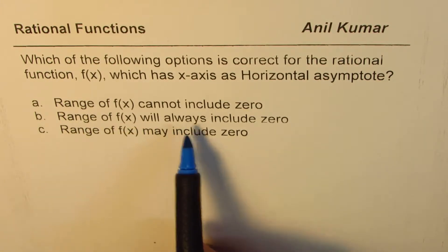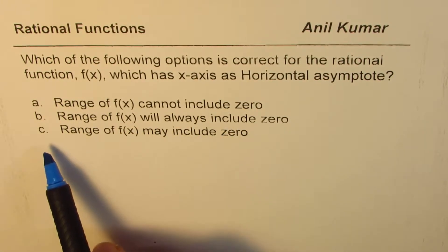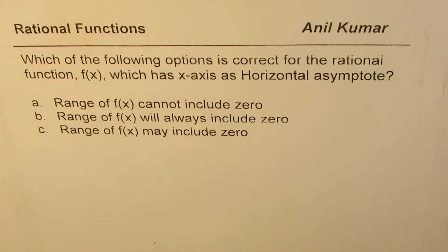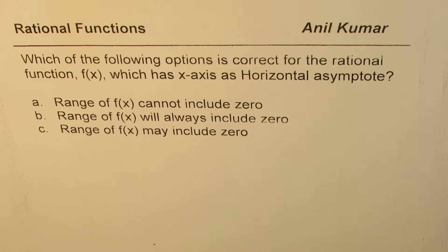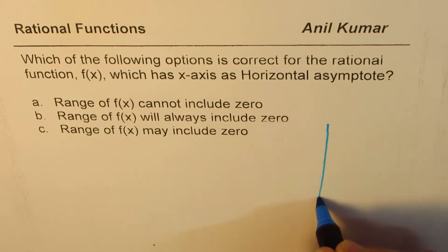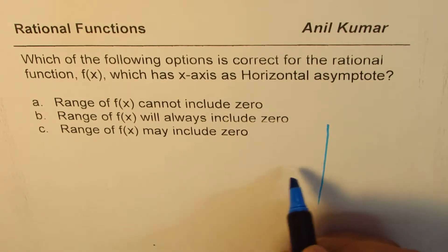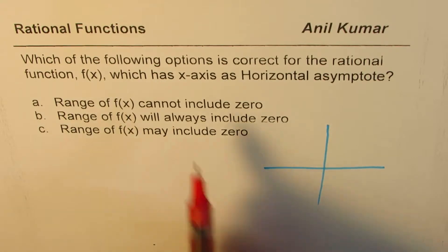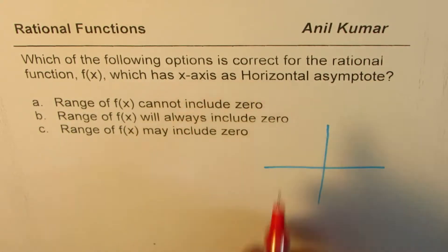Option C is: the range of f of x may include zero. I'd like you to pause the video, answer the question, and then look into my suggestion. Let's try to understand the question — we're given a rational function where the x-axis is the horizontal asymptote.